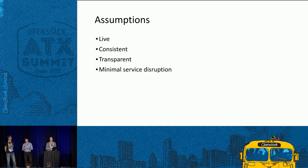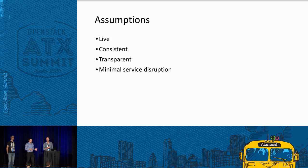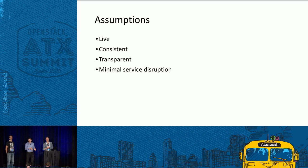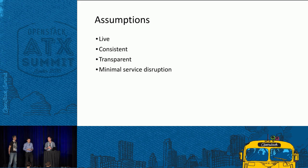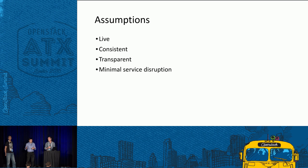There are four assumptions about live migration. First, it needs to be live — the VM keeps operating while being transferred. Second, it needs to be consistent — the VM state on destination will be identical to what was on the source. Third, it needs to be transparent — you won't notice it at all, and applications don't need to be cloud-aware. Fourth, there is minimal service disruption — no significant performance degradation, with only a brief pause of a couple of milliseconds at the end to transfer remaining state.